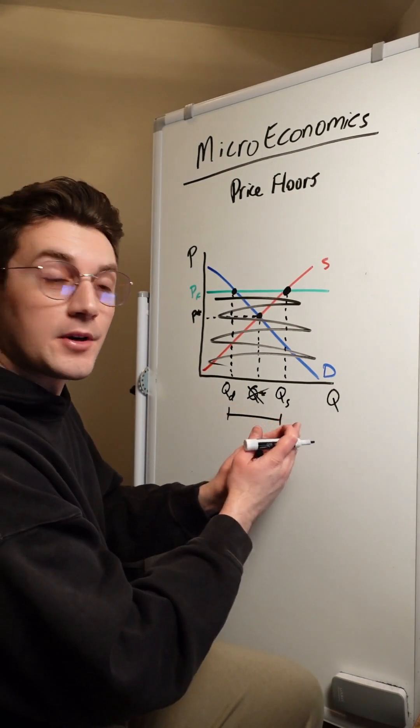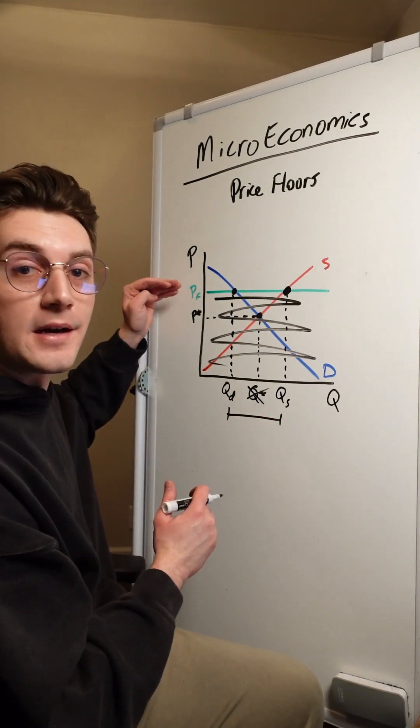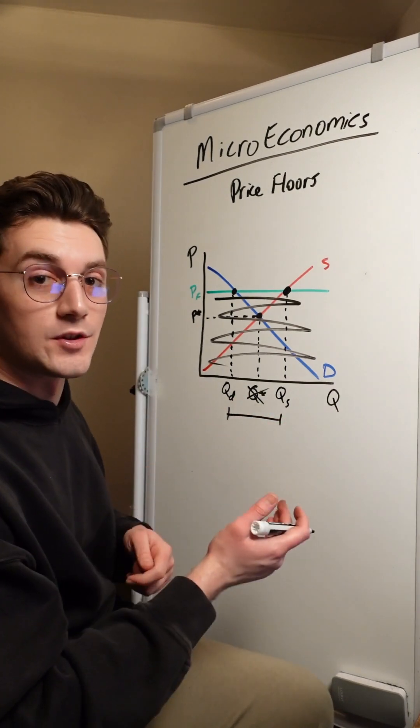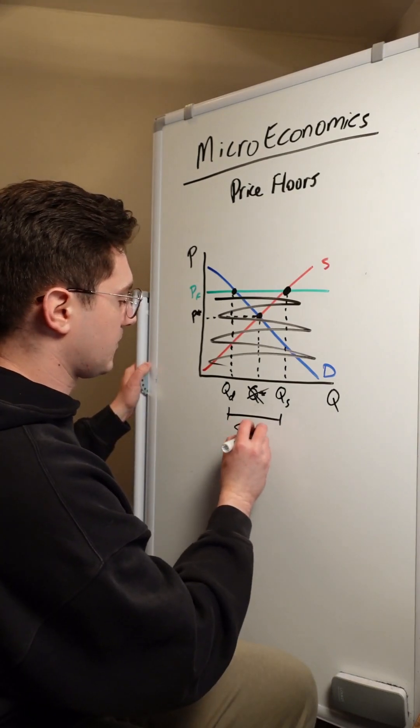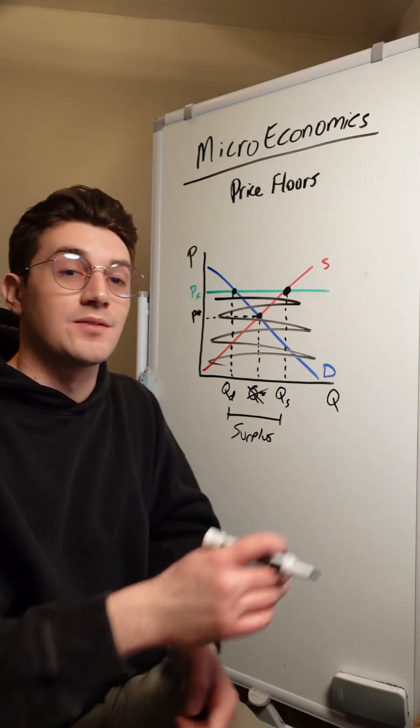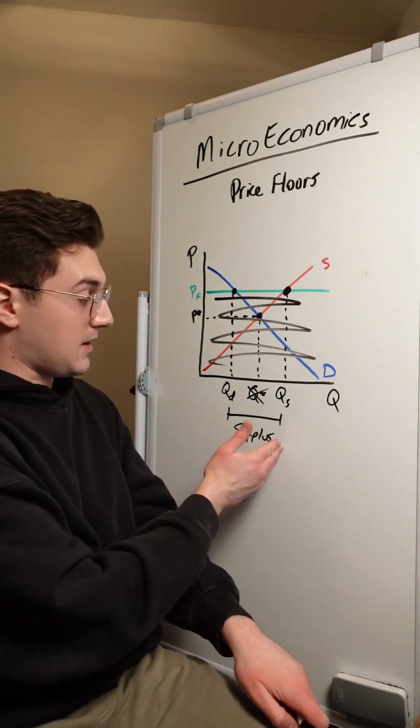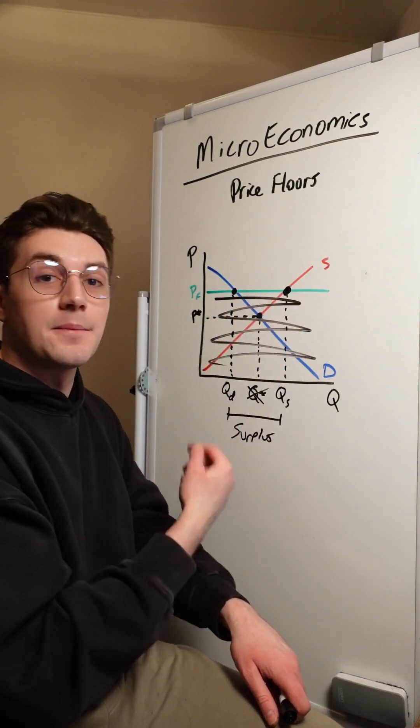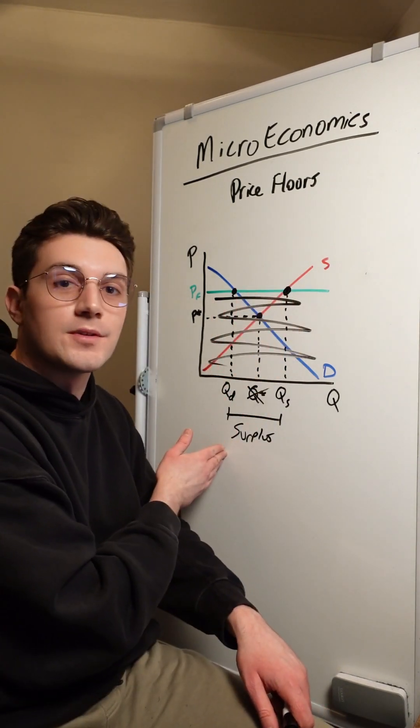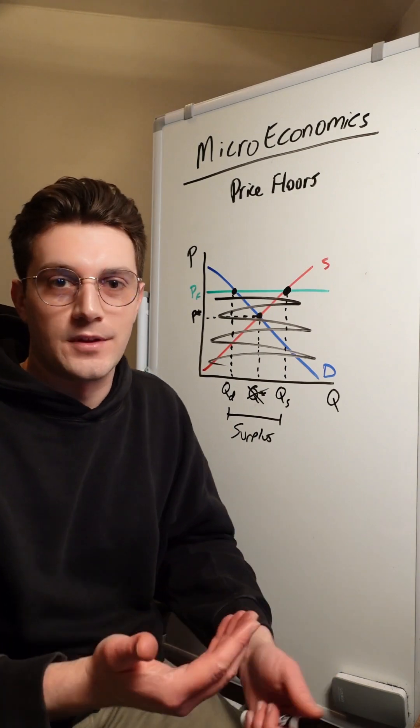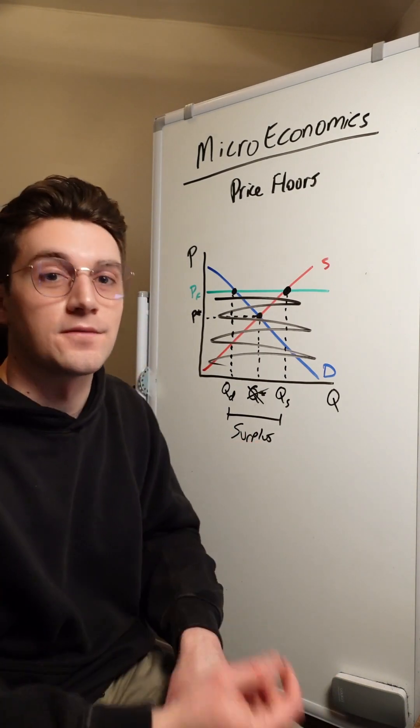More units are being supplied to the market at the higher, artificially higher price and less units are being demanded by consumers. That means we're going to have a surplus of units that are sitting out there in stores, but nobody wants to buy. Suppliers want to sell more at this new artificially high price floor price, whereas consumers just don't want to buy it because it's too expensive for them. So that results in surplus of units.